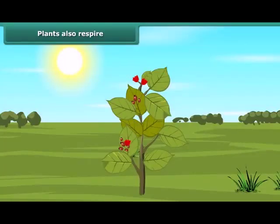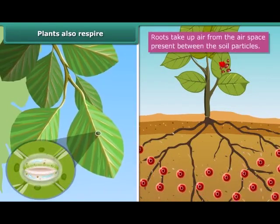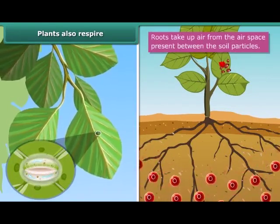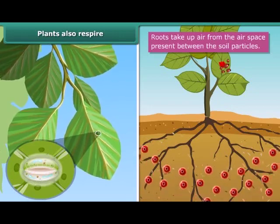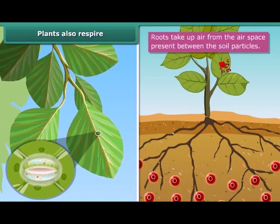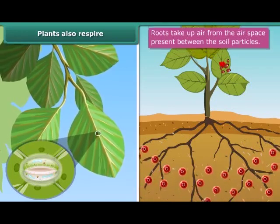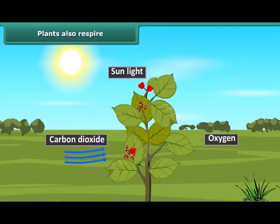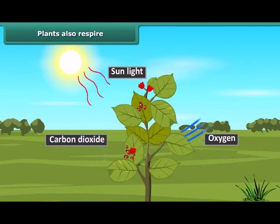In plants, respiration takes two different forms. First, the pores of the plant absorb oxygen and release carbon dioxide. These pores are present all over the plant body and even in the roots. Second, when photosynthesis takes place, plants absorb carbon dioxide and release oxygen.